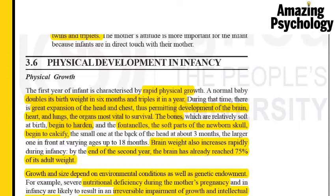The bones during this stage slowly begin to harden — they are relatively soft when the child is born. The fontanels, which are the soft parts of the skull, begin to calcify or harden. Brain weight also rapidly increases, and by the end of the infancy period — at two years — the brain would have already reached 75% of its adult weight.